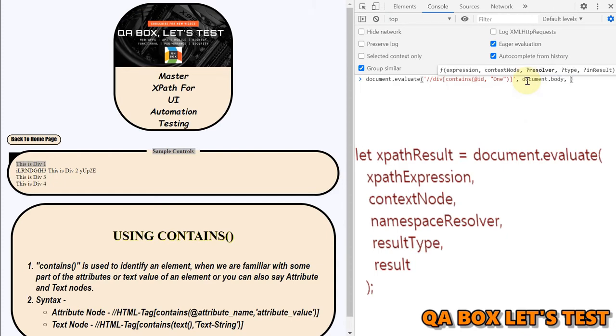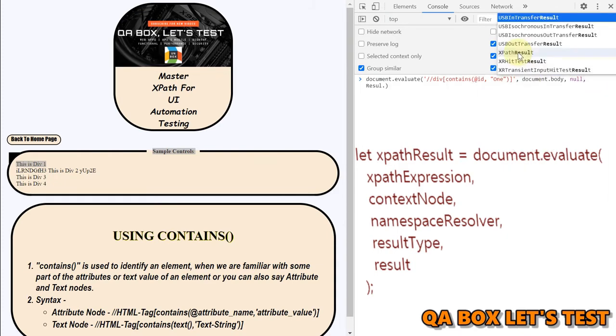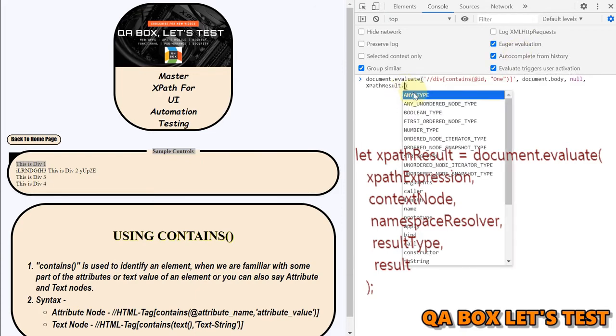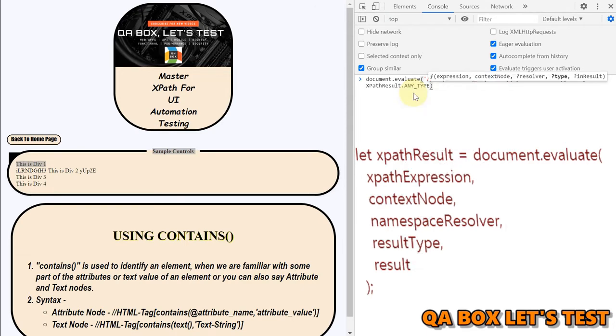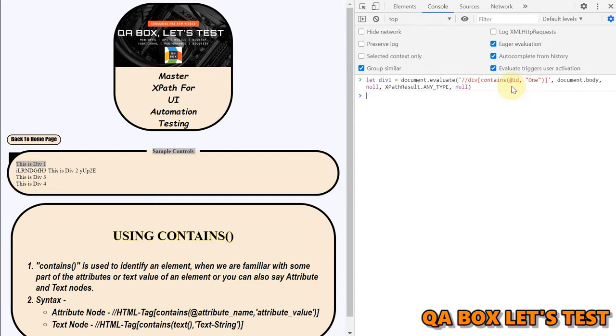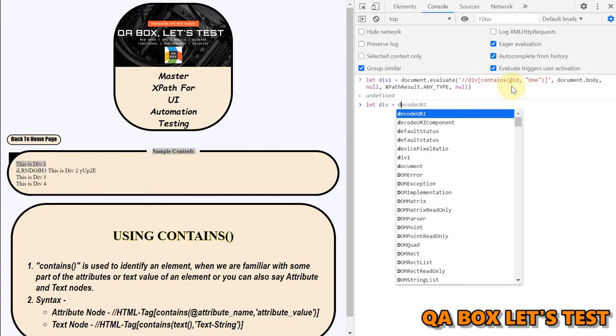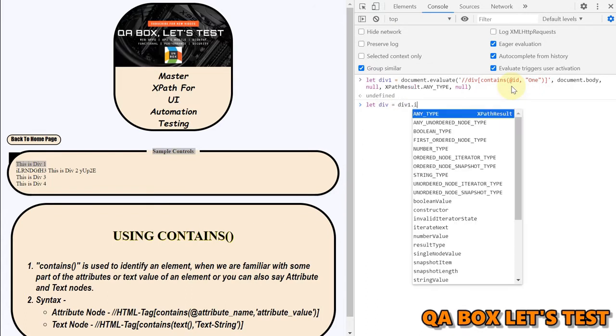Next is resolver is null, like I said, and then we are going to say xpath result. And then the type has to be any type. And then the next thing is null. So I'm going to store that into a variable. I'll say div1 is equal to this. The next thing that I have to do is because this gives me the object of iterator. So I have to say, let div is equal to div1 dot iterate next.